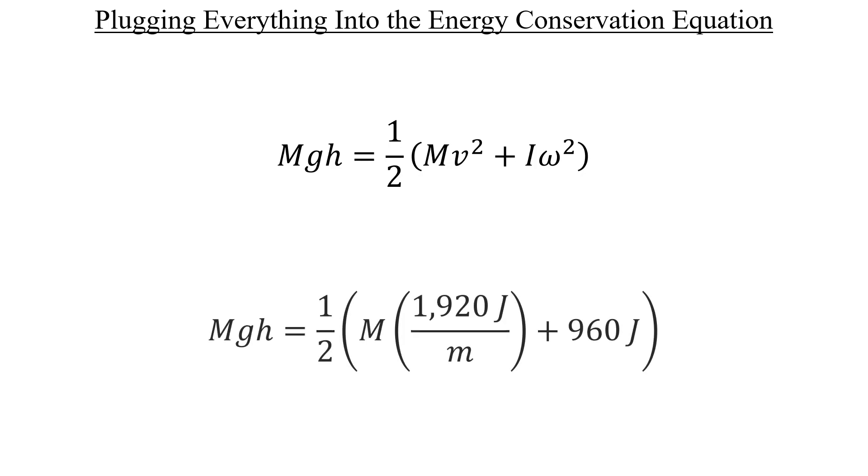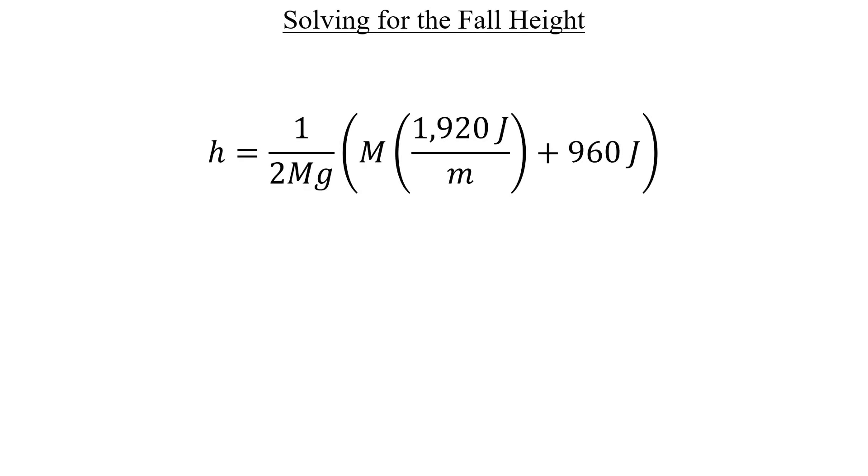And with that gone, everything looks a lot cleaner. If we divide both sides by capital M and g from the left hand side, well, now we have h isolated and we're one step away from getting our answer.